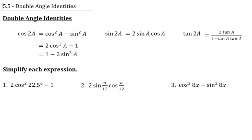We've got a couple different identities. The first one is cosine of 2a, and there are actually three different versions of this double angle identity. It could be cosine squared a minus sine squared a, 2 cosine squared a minus 1, or 1 minus 2 sine squared a.